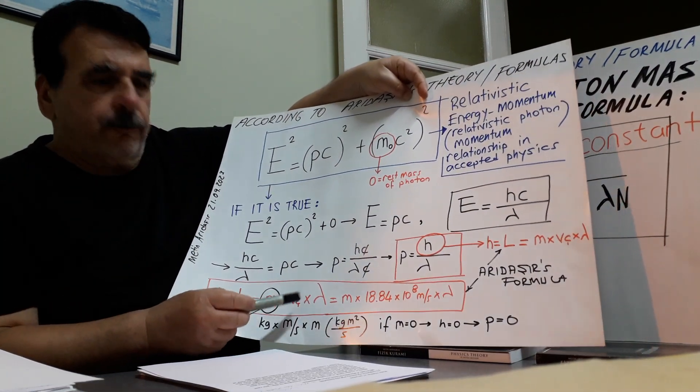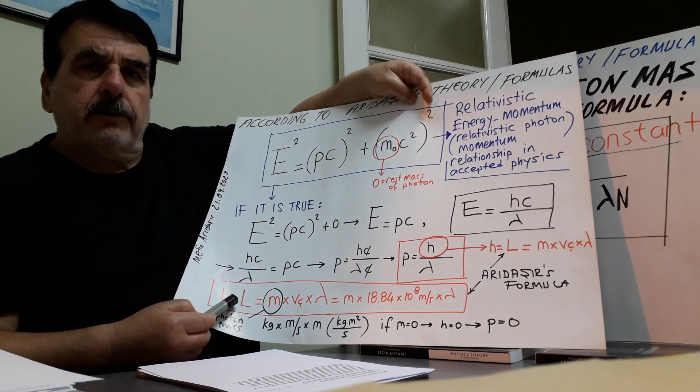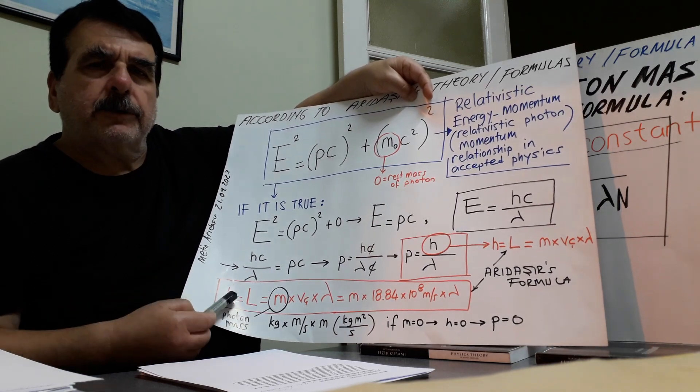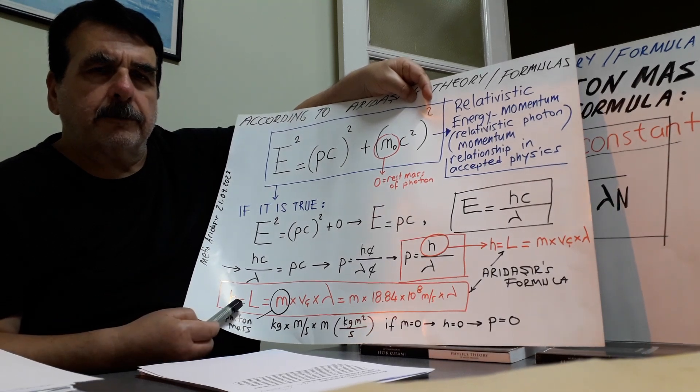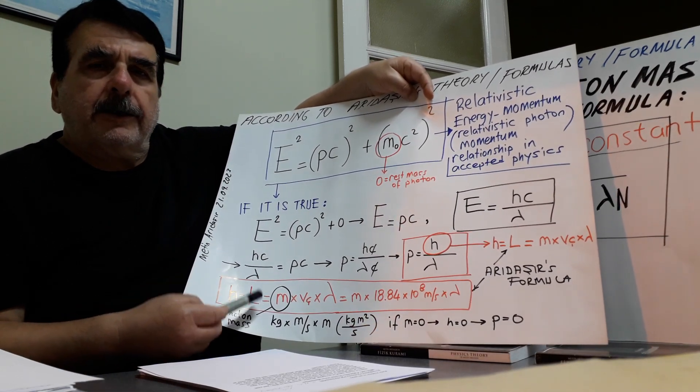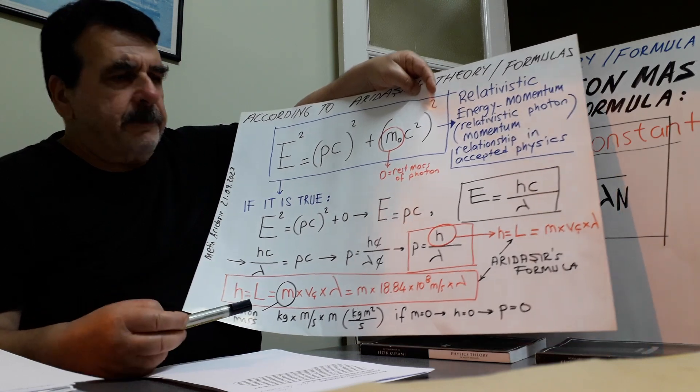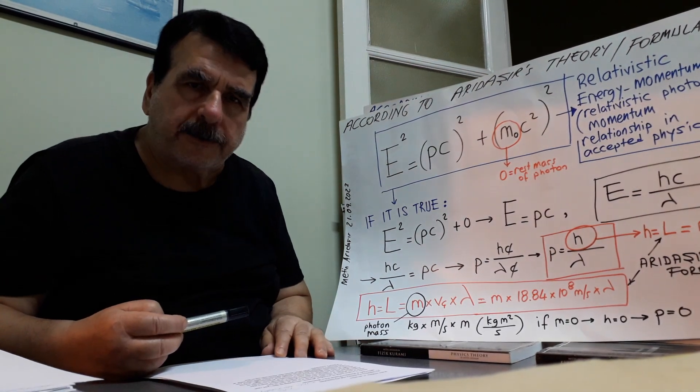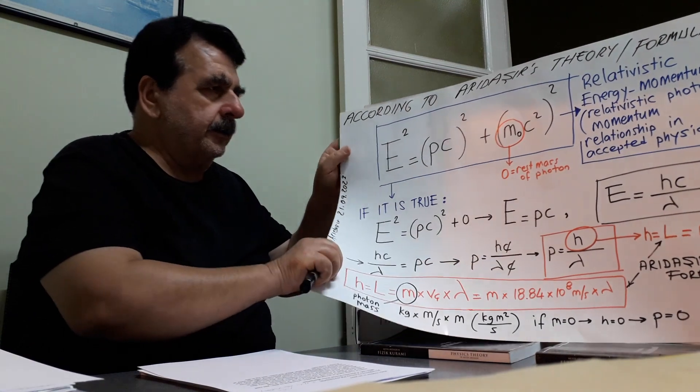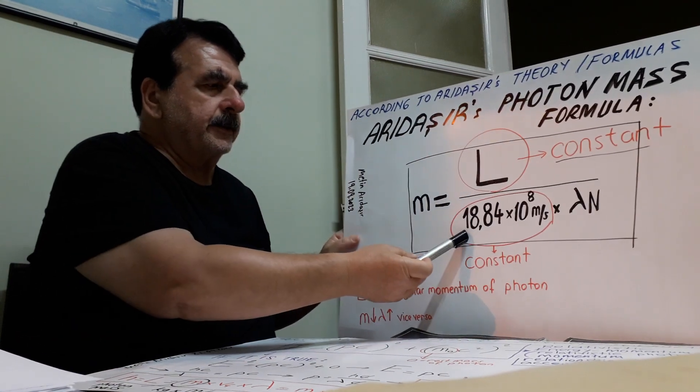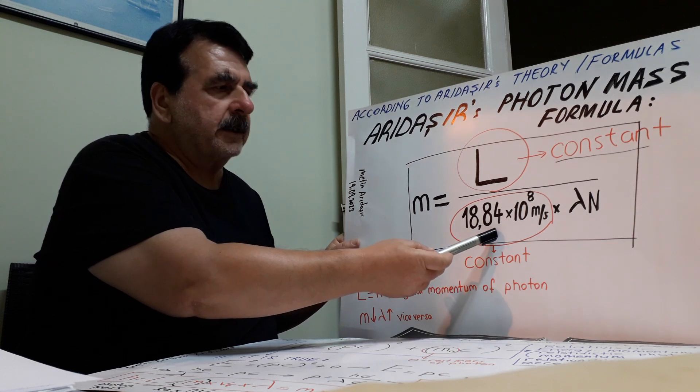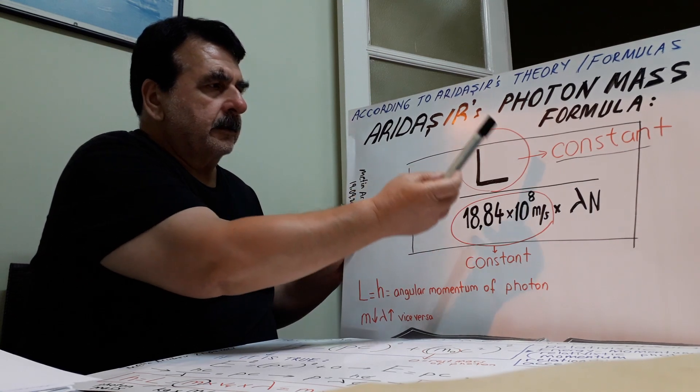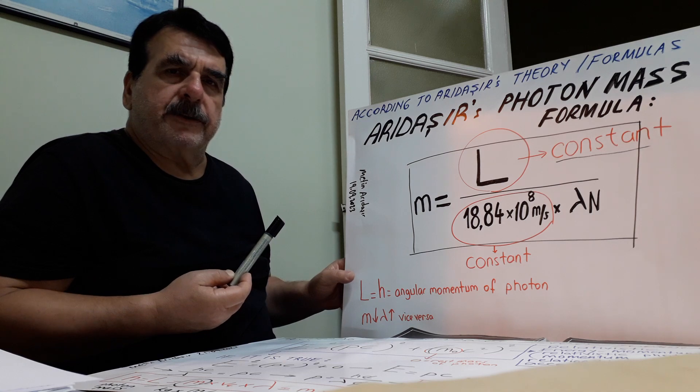This is one of my angular momentum formulas. Angular momentum of a photon formula. Angular momentum of a photon is, according to me, nothing but Planck's constant. In fact, this is 1,884,000 km per second constant.